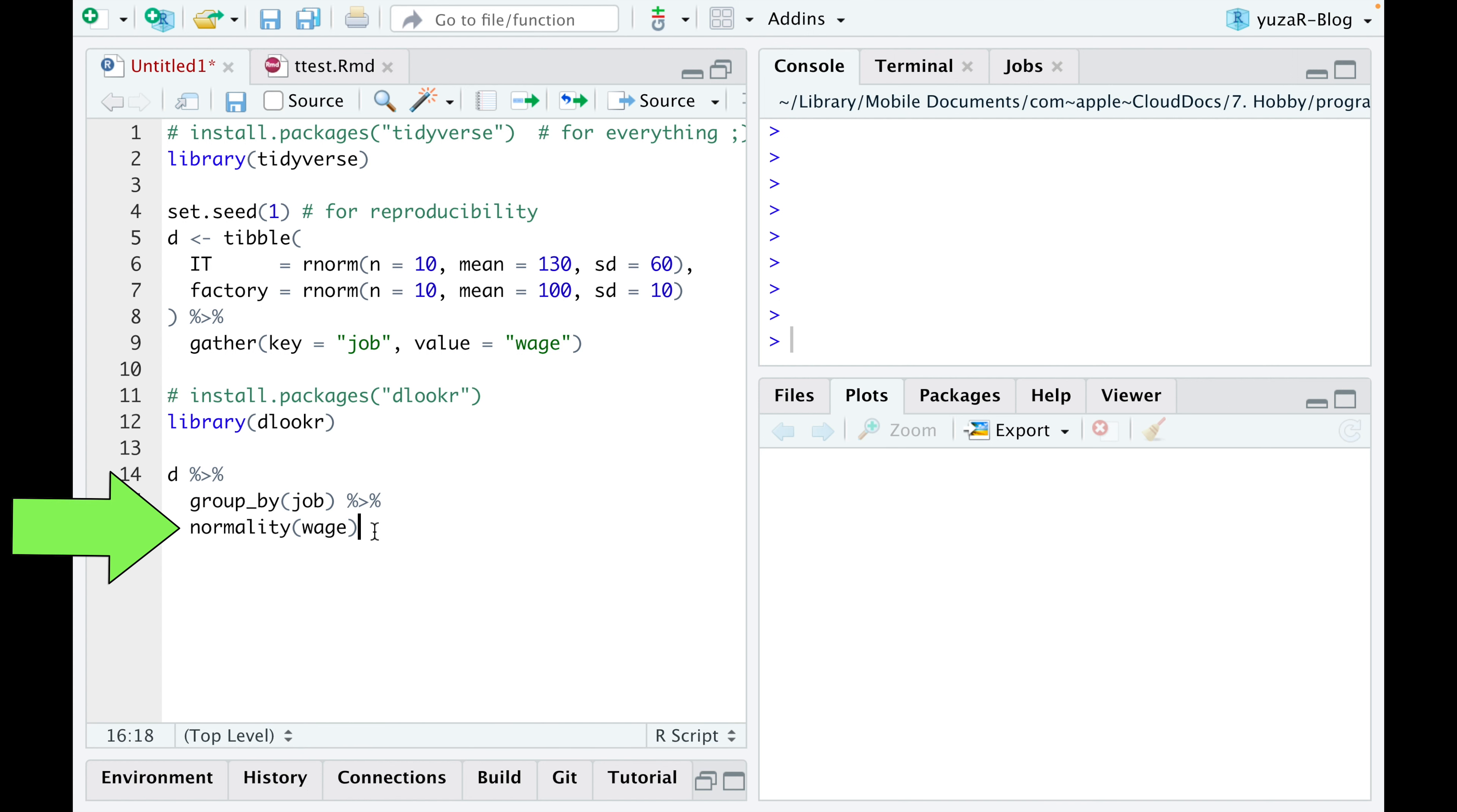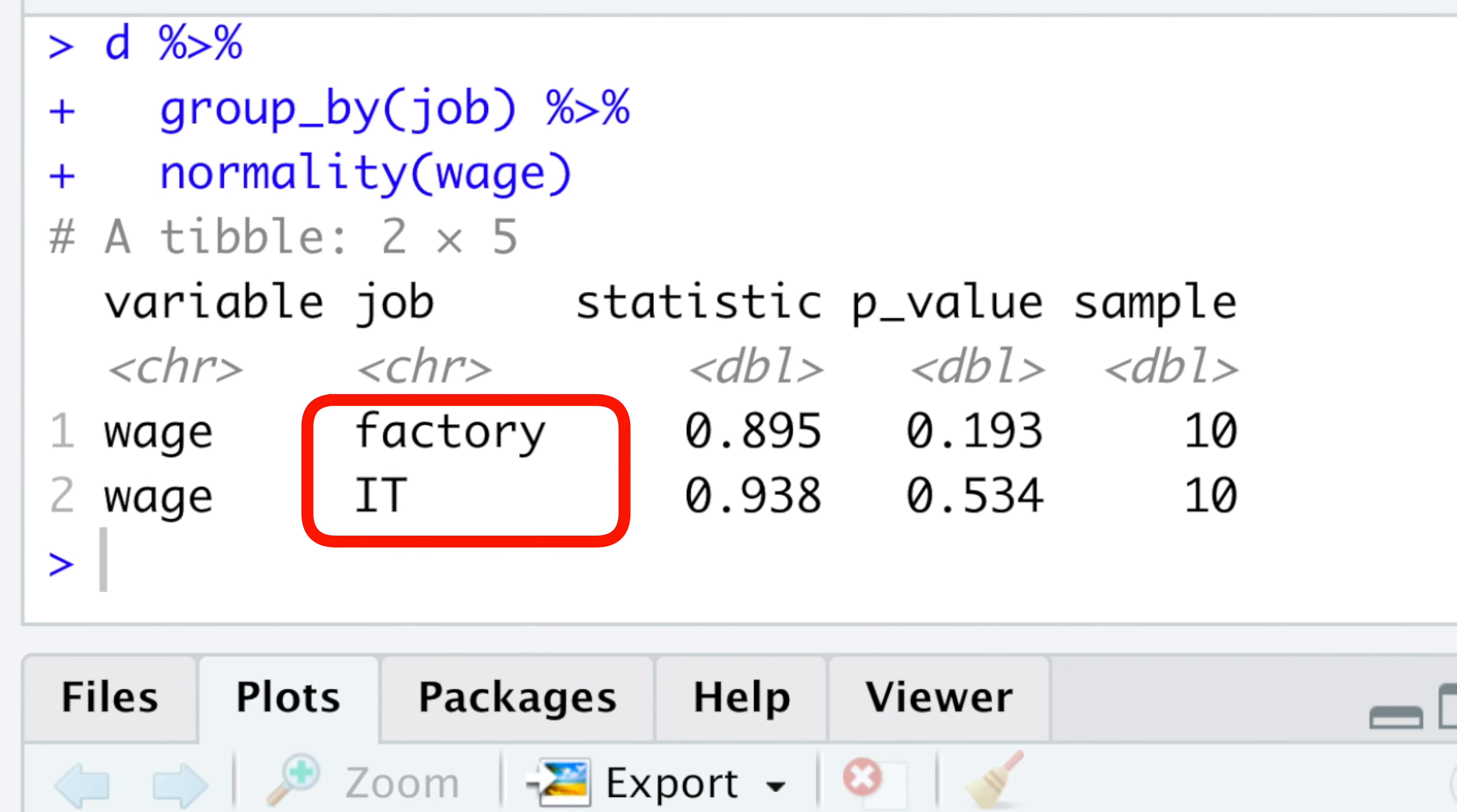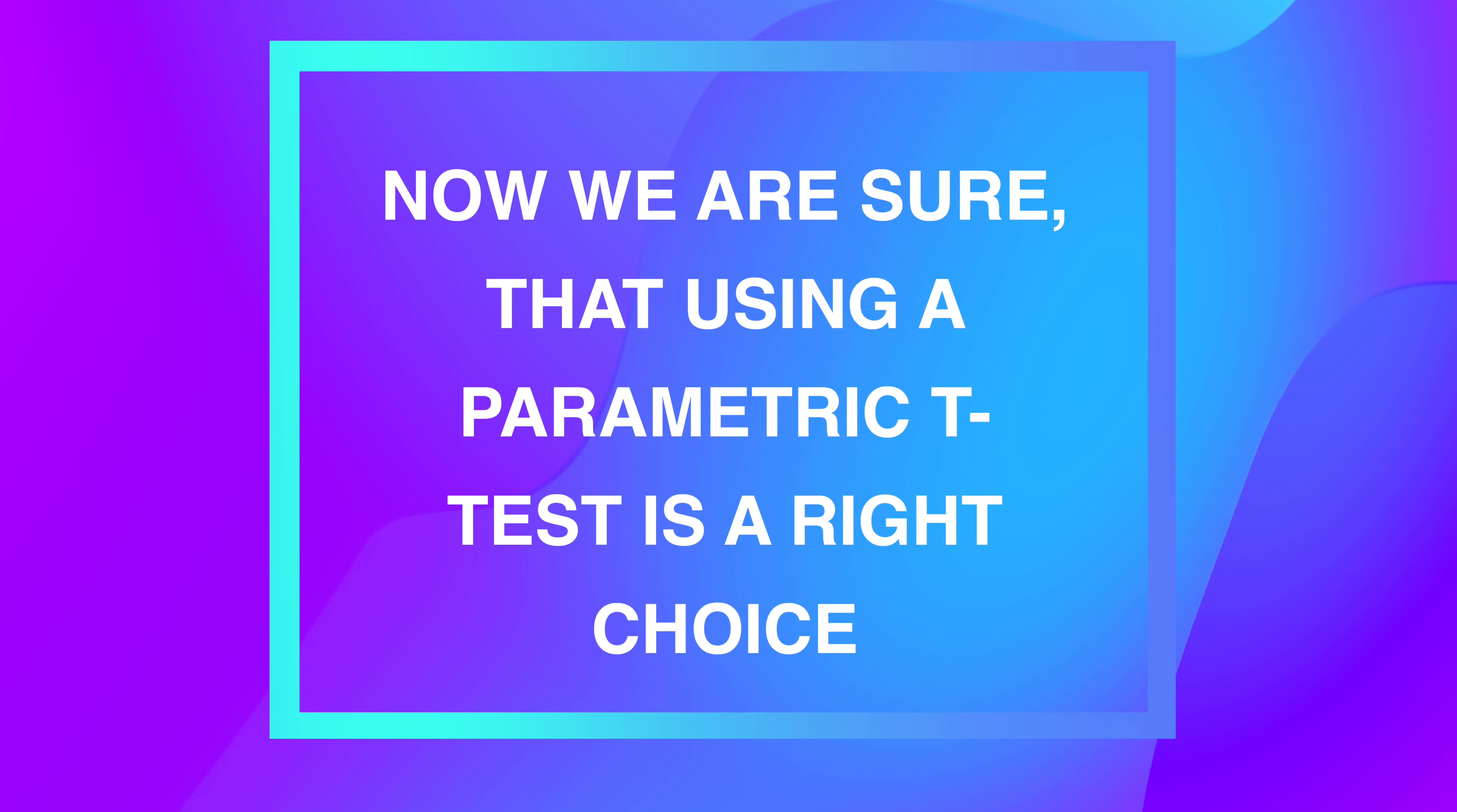For that, we'll use the normality function from the looker package, which conducts Shapiro-Wilk normality tests with every sample. High p-values in both samples indicate that our data is normally distributed. So, now we're sure that using a parametric t-test is the right choice.